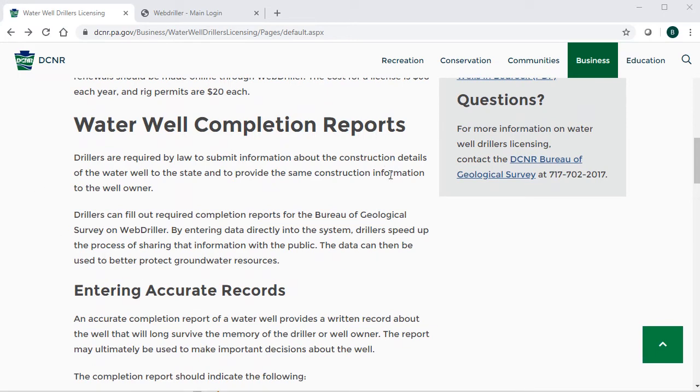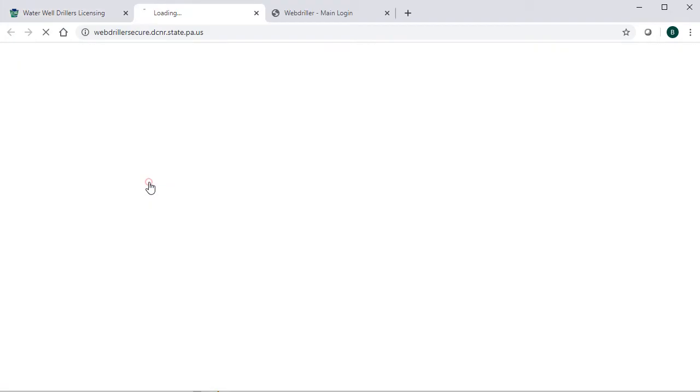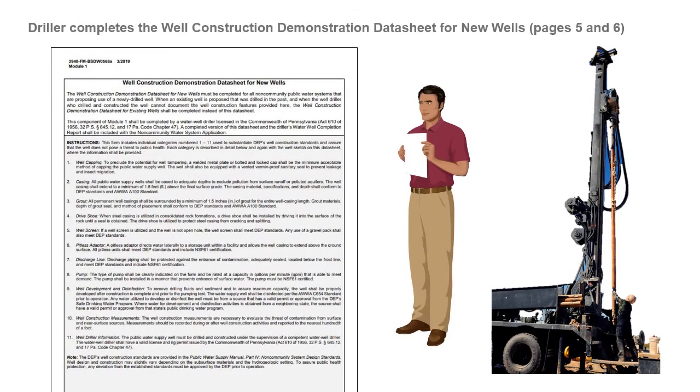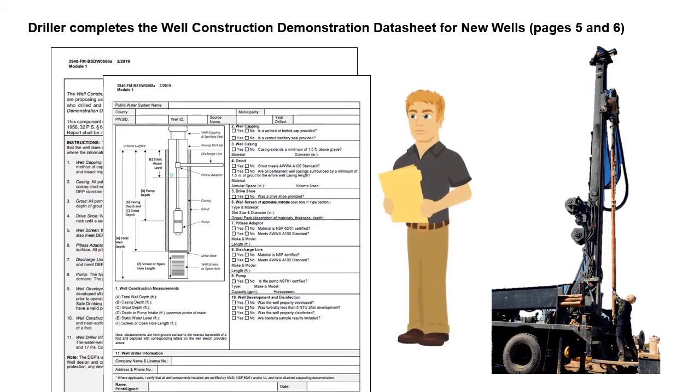Many drillers submit this report electronically, but as the applicant, you should be sure to receive a copy of the completion report to include in your application. The applicant should also ensure that the well driller completes the well construction demonstration data sheet for new wells in Module 1 of the Non-Community Application Package. If you have an existing well, the original well drilling contractor needs to complete this form for your application.